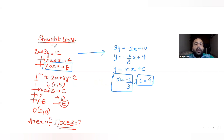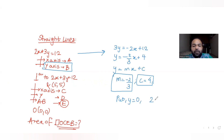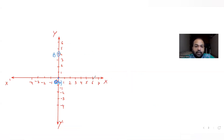Now let's find where this line intersects the x-axis. To find the point of intersection with the x-axis, we put y equals 0 in the equation of the line. So the equation becomes 2x plus 0 equals 12, which gives 2x equals 12, so x equals 6. The point of intersection with the x-axis is (6, 0). This is our point A. So we have point A as (6, 0) and point B as (0, 4).